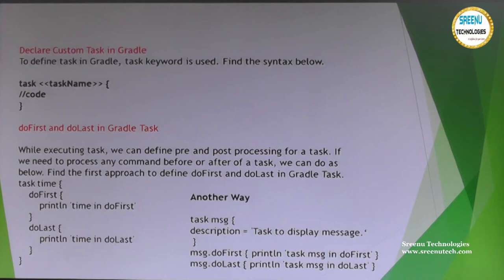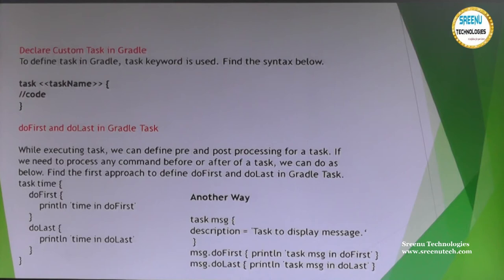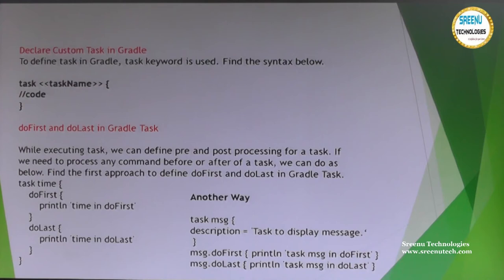These lifecycle methods are like pre-processing and post-processing. We need to distinguish which code should execute in pre-processing and which in post-processing. So tasks have sub-methods for that: doFirst for pre-processing and doLast for post-processing. It is very readable — we simply put what should run first in the doFirst block and what should run last in the doLast block.